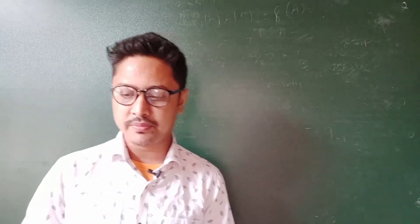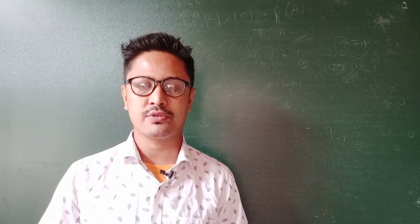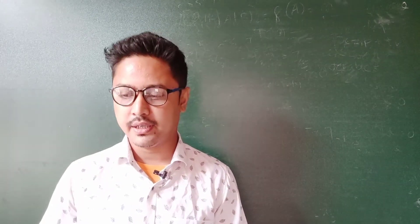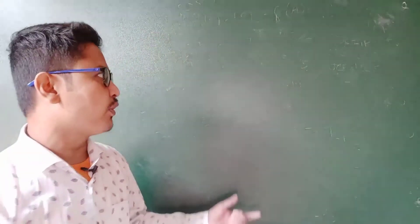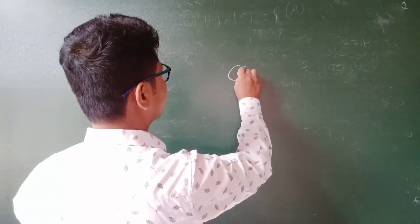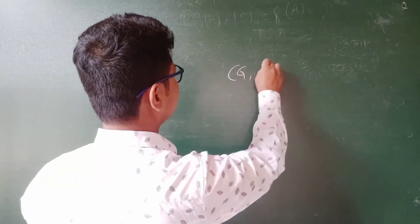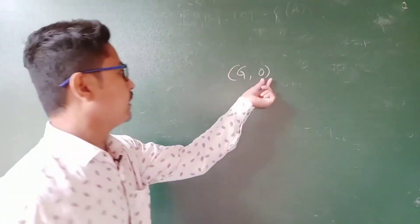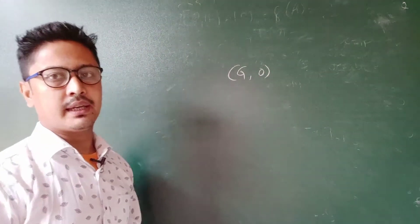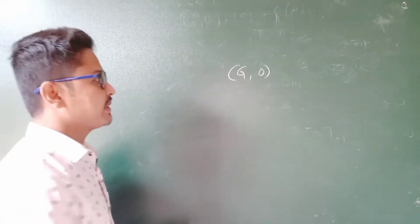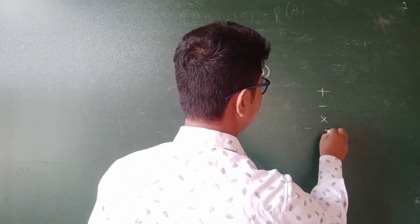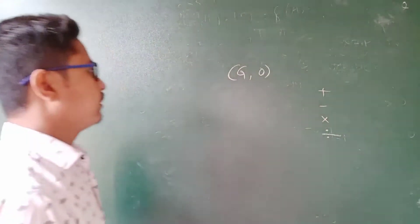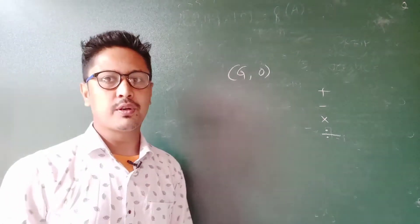I will have a problem. If you have a problem, you will need to have a group. So I have already told you about this group. Here is the algebraic structure. Z dot is any binary operation — that means it may be plus, minus, multiplication, and division. Here is the algebraic structure of a group.